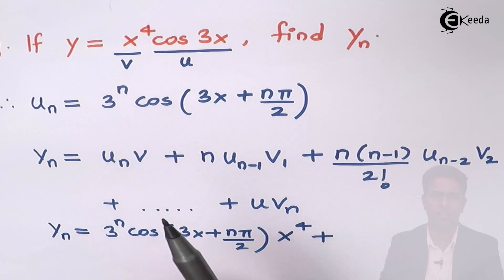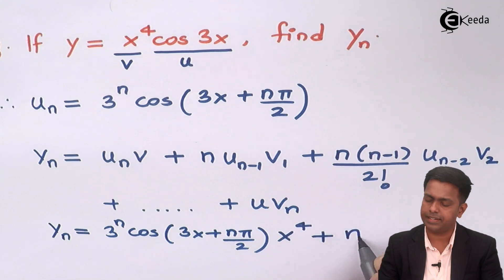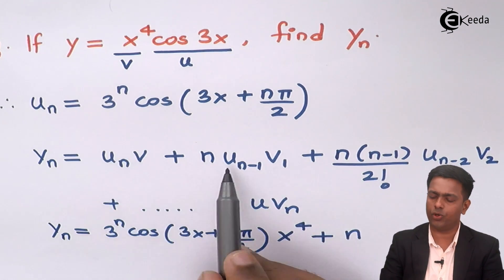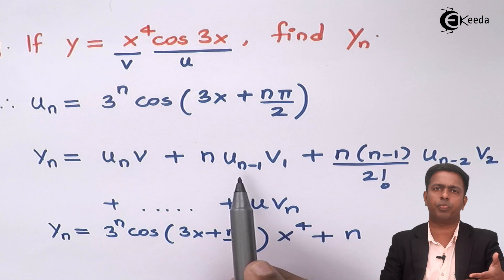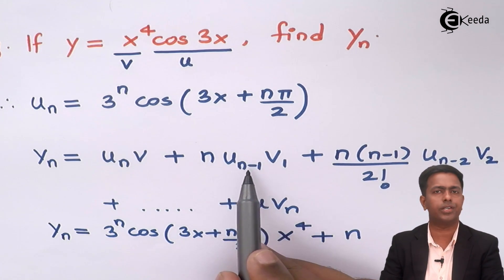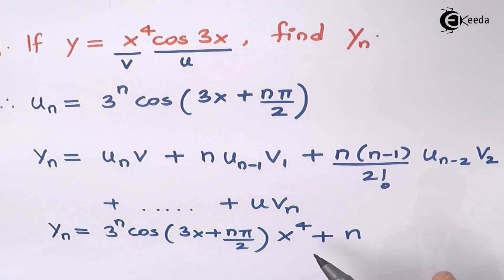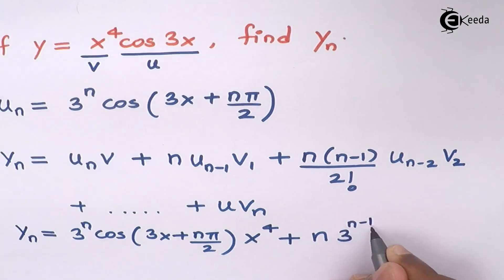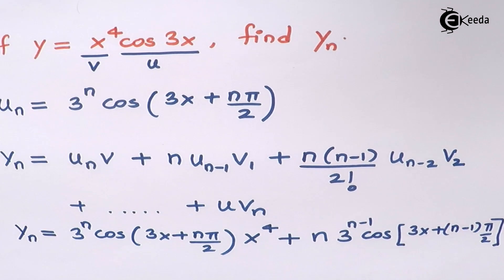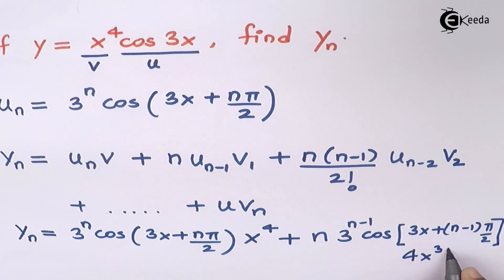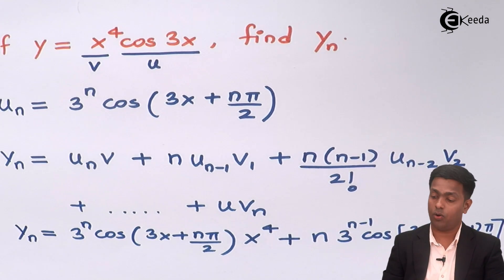u(n−1) is the derivative just previous to the nth derivative. To get this, in the nth derivative formula I replace n with n−1, giving 3 to the power (n−1) times cos(3x + (n−1)π/2). Then v1 is the first derivative of v = x⁴, which is 4x³.